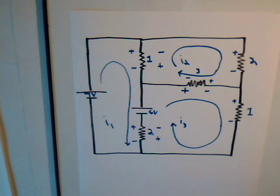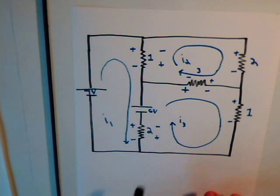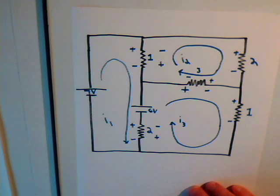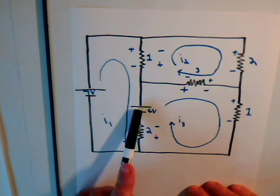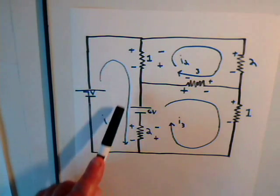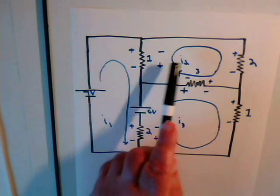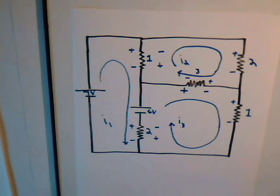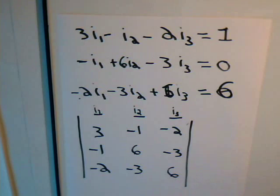This is Part B of our introductory video on mesh current analysis. In Part A, we considered a circuit with a 2 ohm resistor, a 1 ohm resistor, and a 2 ohm and 1 ohm resistor hooked up to a 6 volt battery and a 7 volt battery. We set up the mesh current equations for three separate currents involving three separate loops, and we derived these equations.